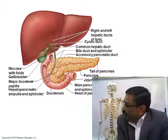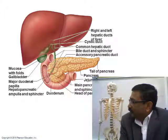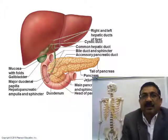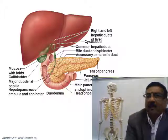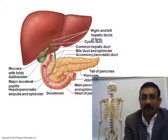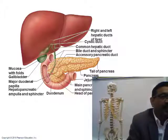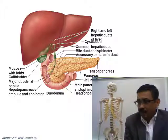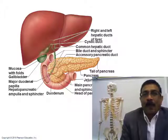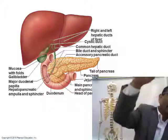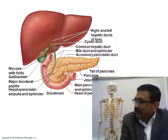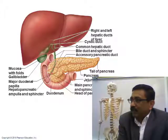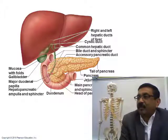From the liver, the right and left hepatic ducts take bile out and join outside the liver to form the common hepatic duct. From the common hepatic duct, a branch — the cystic duct — goes to the gallbladder. Most of the bile travels to the gallbladder through the cystic duct.